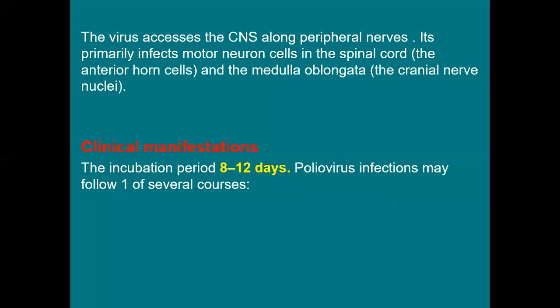The medulla oblongata contains the nuclei of the cranial nerves, specifically the 9th and 10th cranial nerves — the glossopharyngeal and vagus nerves. It also contains the vital centers of the body: the respiratory center, the cardiac center, and the vasomotor regulatory center.